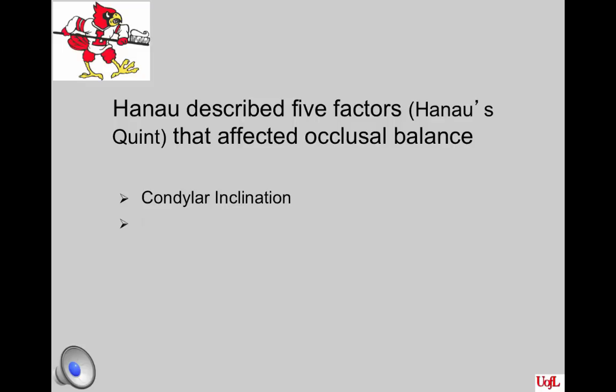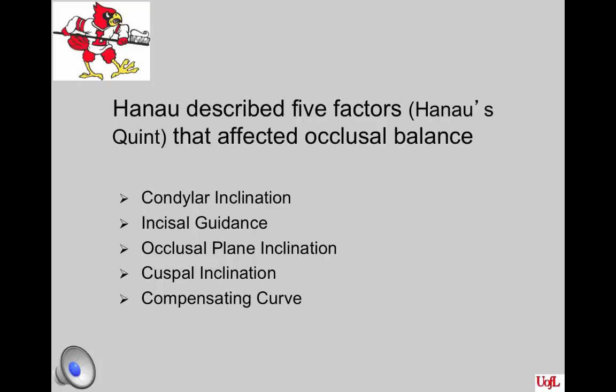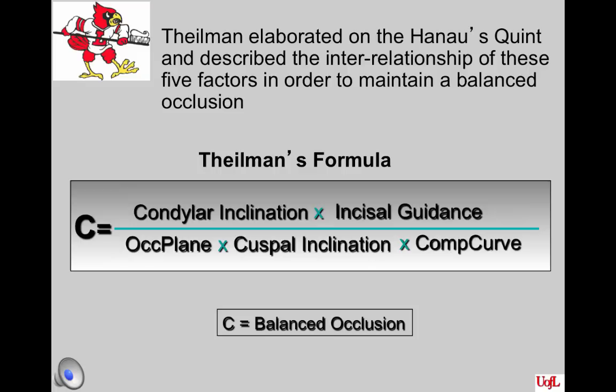The five factors are: condylar inclination, incisal guidance, occlusal plane inclination, cuspal inclination, and compensating curve. Thielmann elaborated on Hanau's Quint and described the interrelationship of these five factors in order to maintain balanced occlusion, as shown using Thielmann's formula on the slide, and we will discuss the interrelationship between these factors.